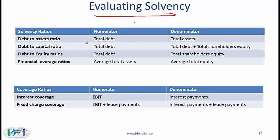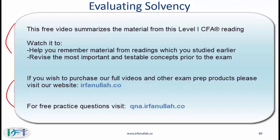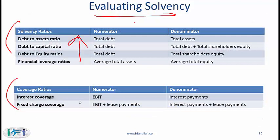Almost done with this reading — evaluating solvency. To evaluate a company's ability to pay off long-term debt, you look at the debt-to-assets ratio, debt-to-capital ratio, debt-to-equity ratio, and financial leverage ratios. High ratios indicate higher financial risk. Coverage ratios, which we've seen before, indicate relative safety when they are high.